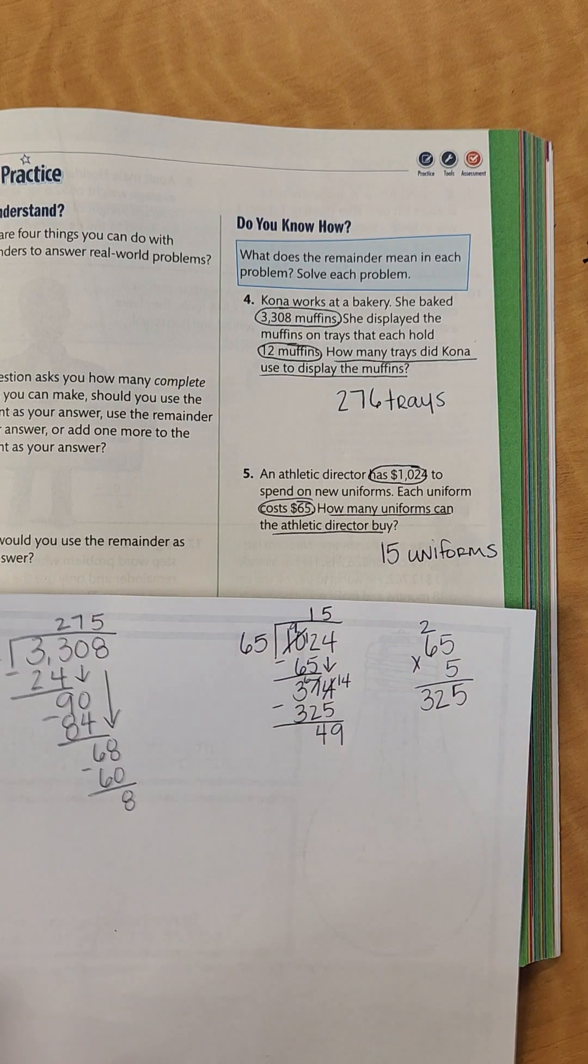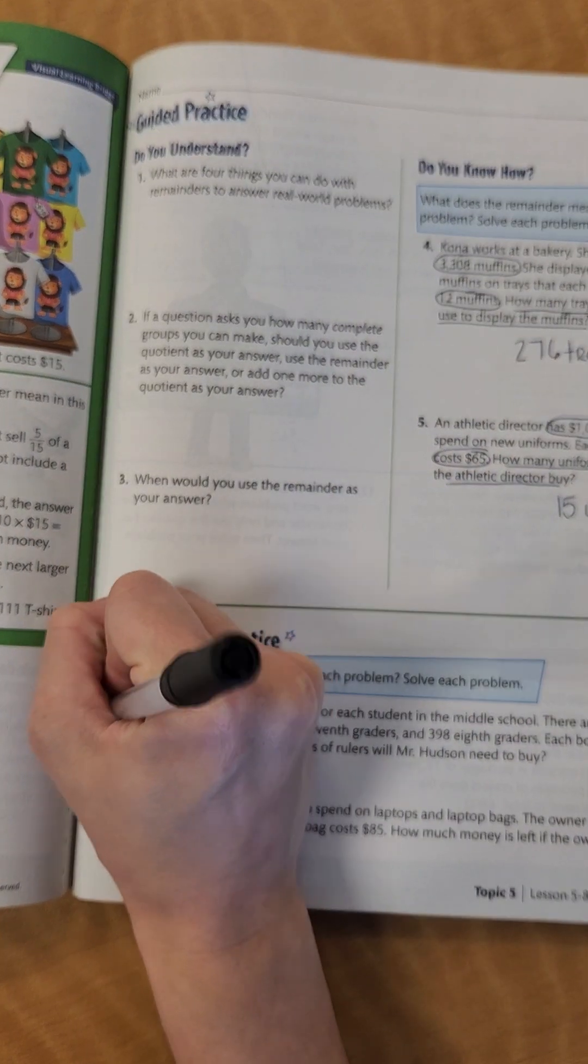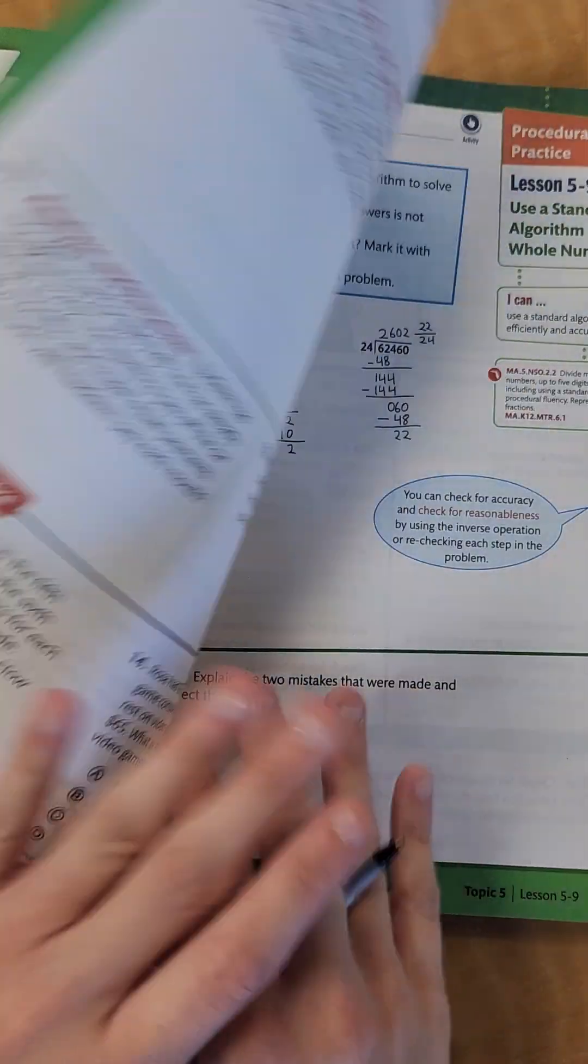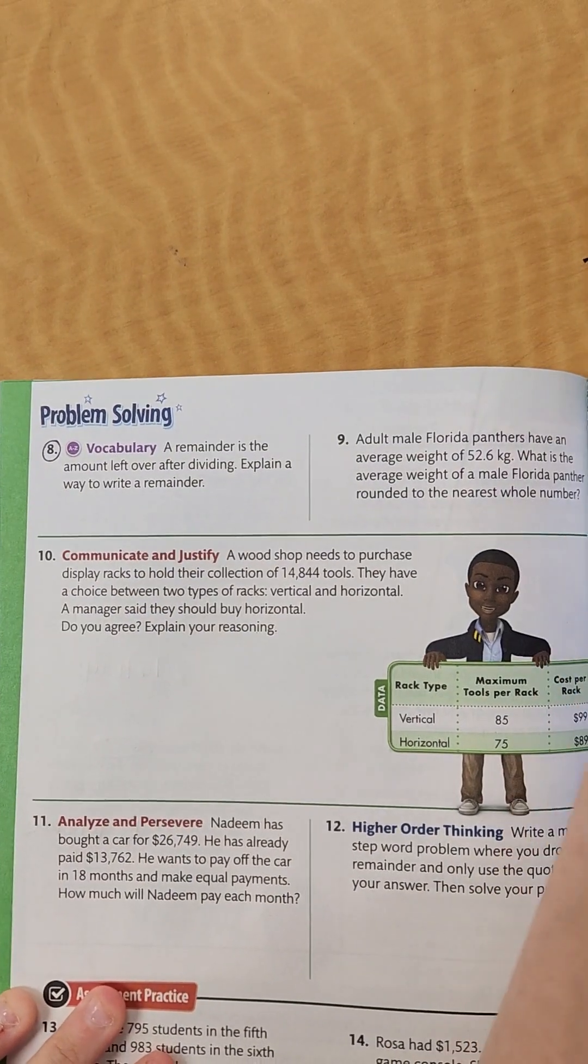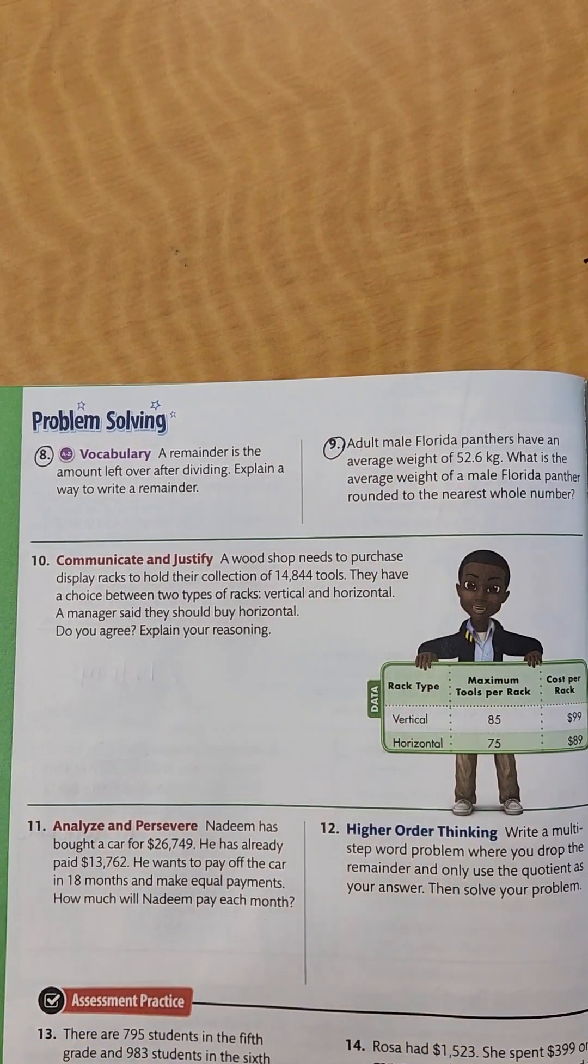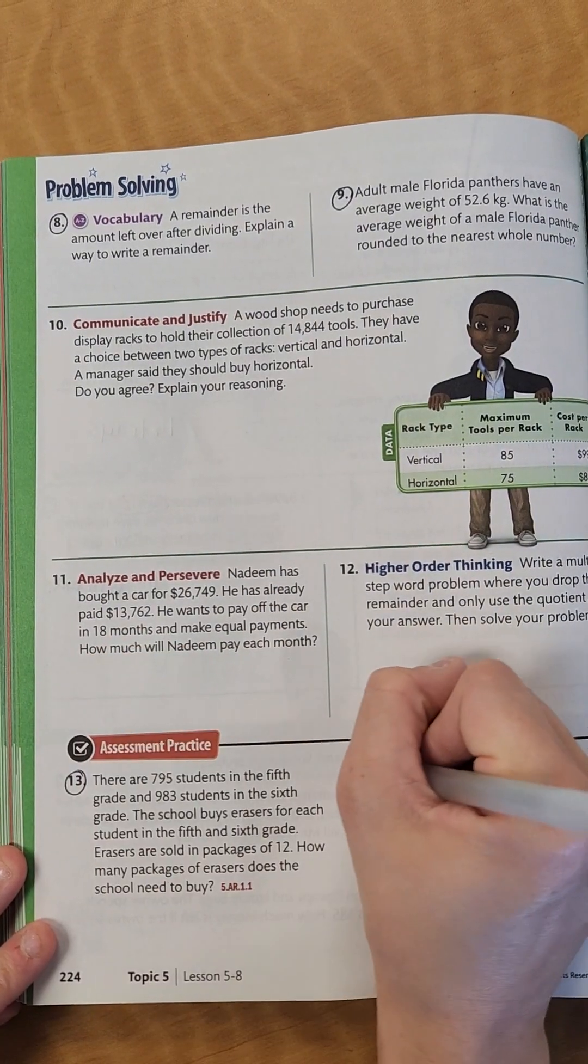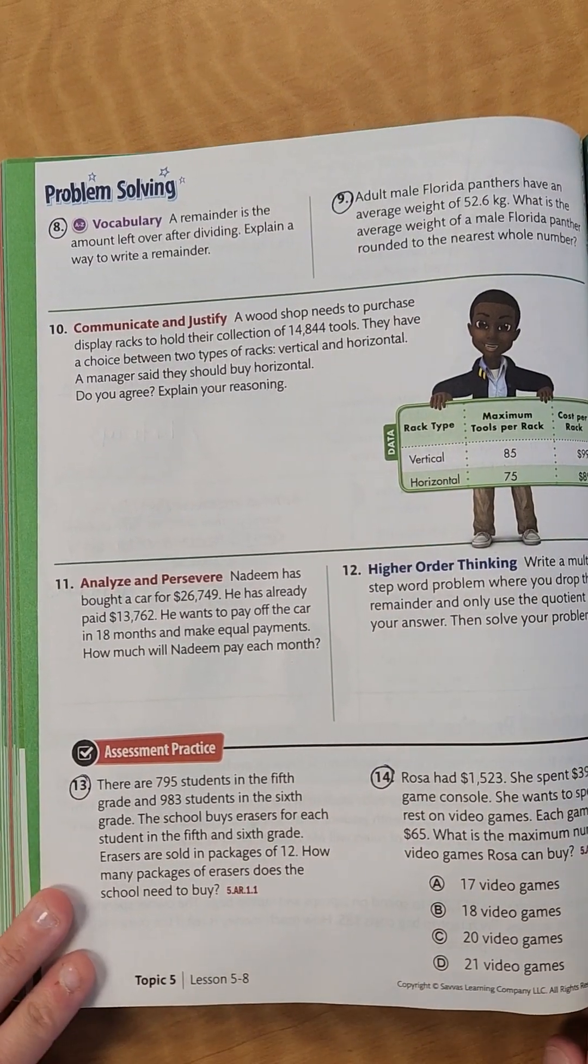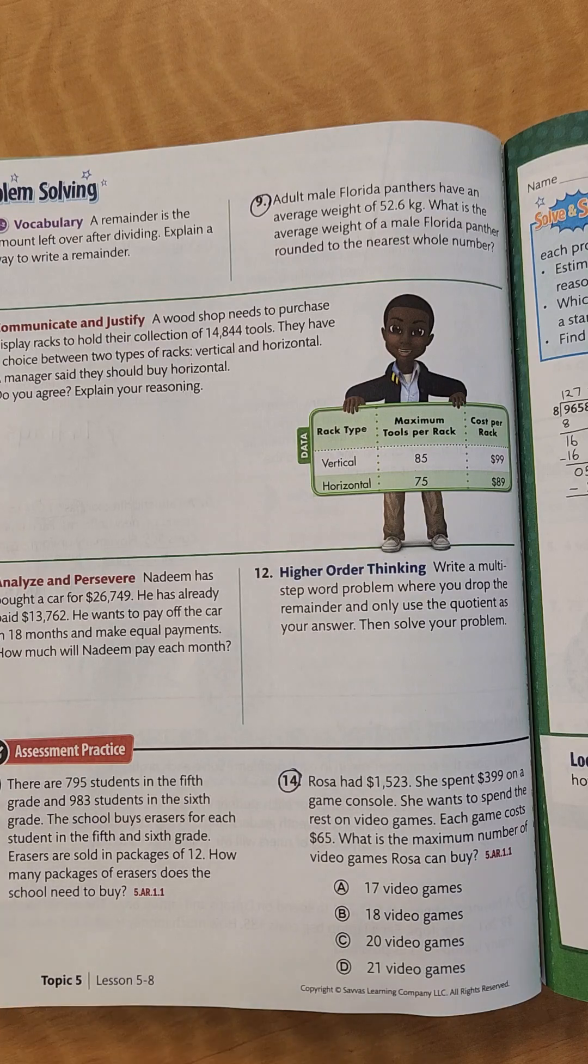Now, on your own, I want you to try number 6, number 7, flip to the back, do number 8, number 9, 13, and 14. So there's a lot of word problems. This might take a little time. And you know what? That's fine. Just take your time and make sure you work through these problems, guys. Good luck.